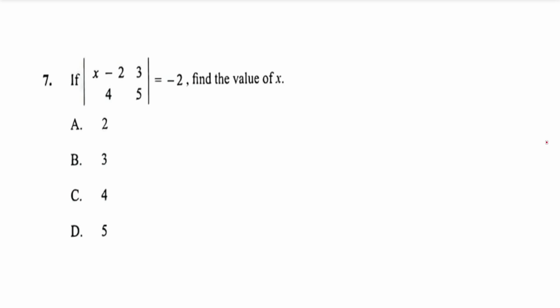First of all, the straight bars mean the determinant of the matrix. And whenever we see this, it is solved by multiplying the leading diagonal minus the product of the other diagonal.